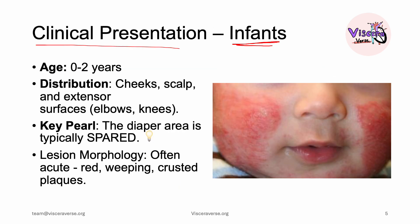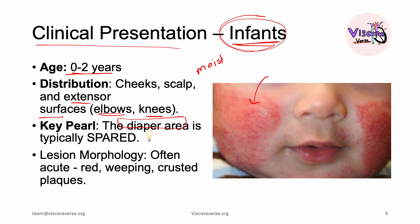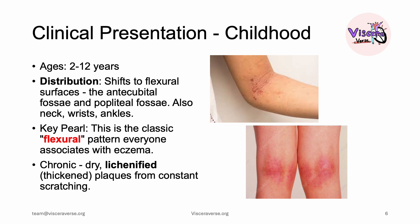Let's discuss the clinical presentation in different age groups, starting with infants — patients between 0 and 2 years of age. In babies, eczema typically affects the cheeks and the extensor surfaces of the legs and arms, such as the elbows and knees. A key pearl: the diaper area is typically spared because it's moist. If a rash is seen there, think of seborrheic dermatitis instead. Lesion morphology in infants is often acute — red, weeping, with crusted plaques.